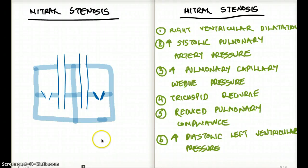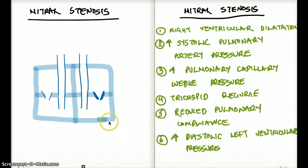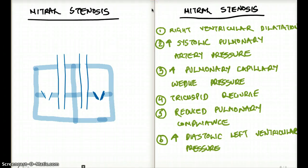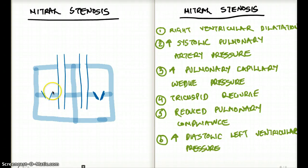This video talks about isolated mitral stenosis. When do we have isolated mitral stenosis? It usually happens with rheumatic fever. 70% of cases only the mitral valve is affected, and 25% of cases both the mitral and aortic valve are affected. In isolated mitral stenosis, there won't be stenosis of the tricuspid, pulmonary, or aortic valves.